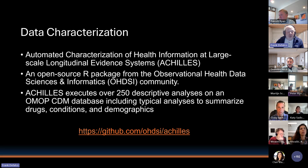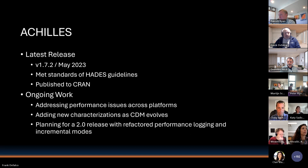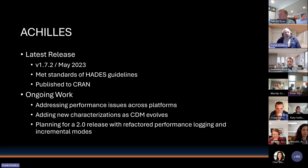Being the open-source community that we are, you can find Achilles at the GitHub OHDSI repo in the Achilles repository. The latest release was in May of 2023 with version 1.7.2. This was a significant update as we conformed to the HADES guidelines and were able to publish Achilles to CRAN, making it more available for members within the community.